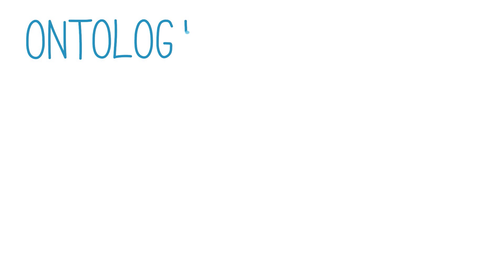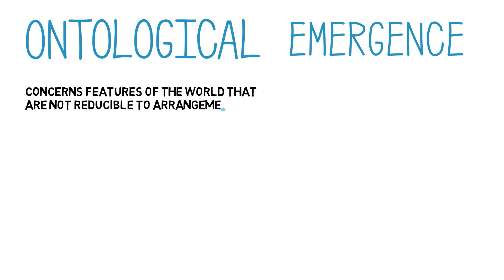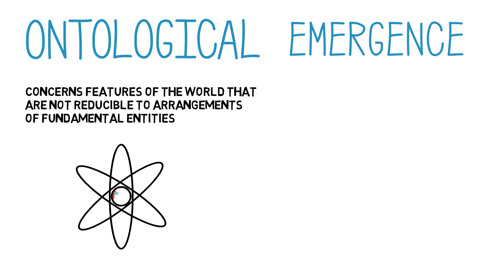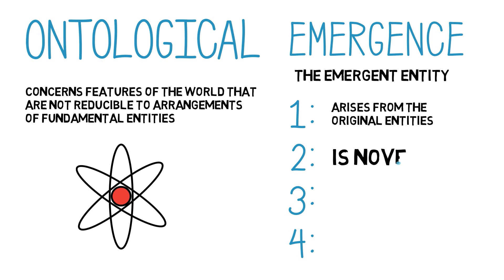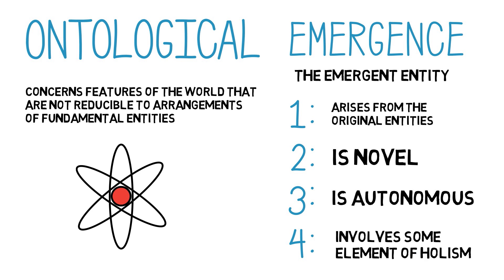Ontological emergence is more difficult to characterize than epistemological emergence, because it concerns features of the world that are not reducible to arrangements of fundamental entities. Examples of ontological emergence are rare, and we should not look for them in the everyday world, but they do exist in physics and chemistry. To help us, we can consider four typical features of ontological emergence: the emergent entity arises from the original entities; the emergent entity is novel; it is also autonomous; and some element of holism is involved.